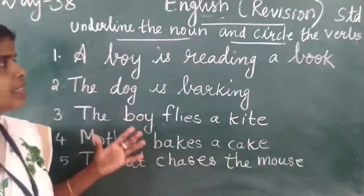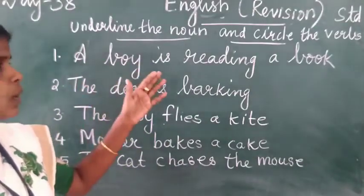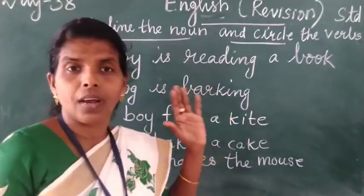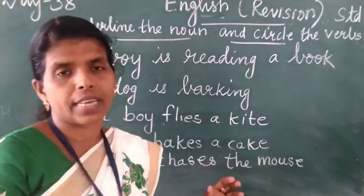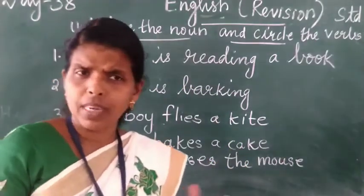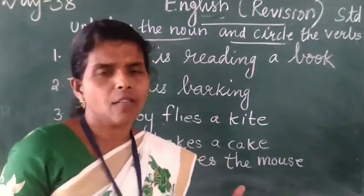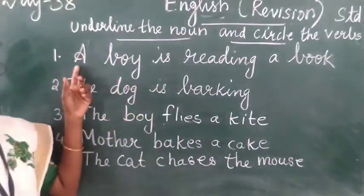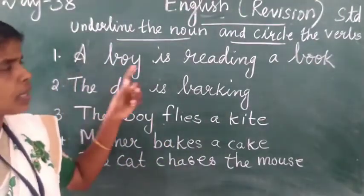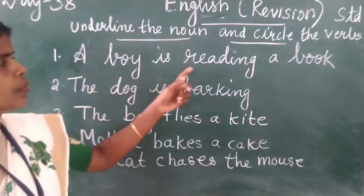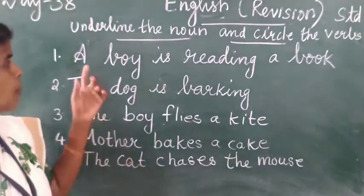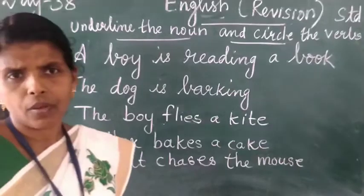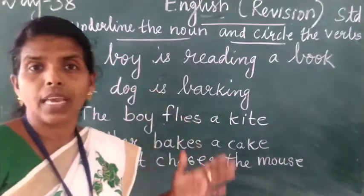So then, read this sentence and underline the noun. See the sentence given: A boy is reading a book. A boy is reading a book.